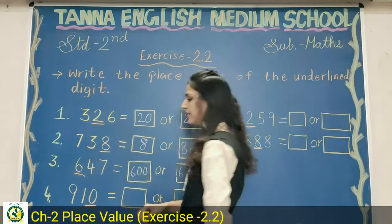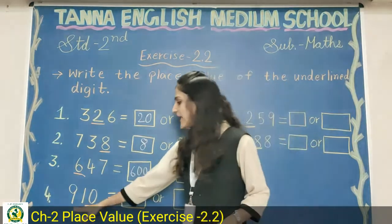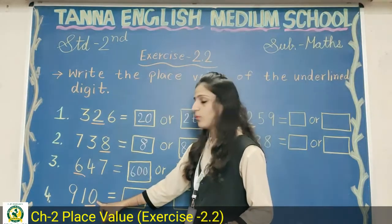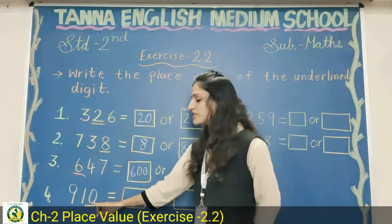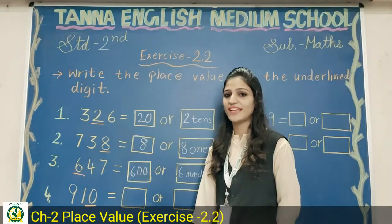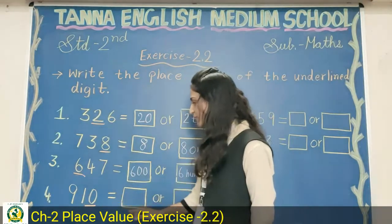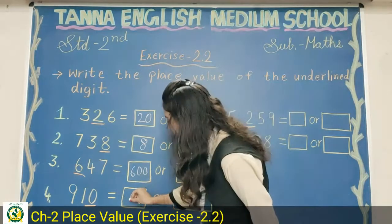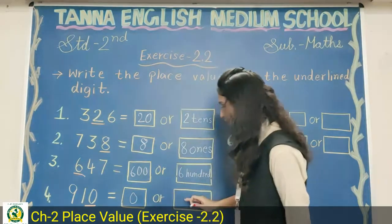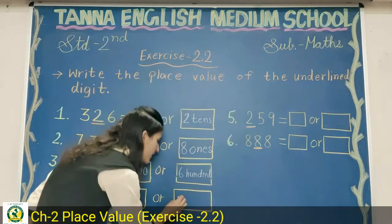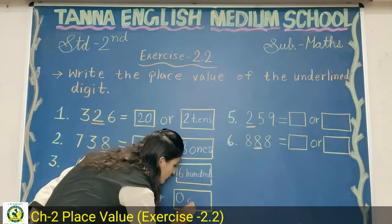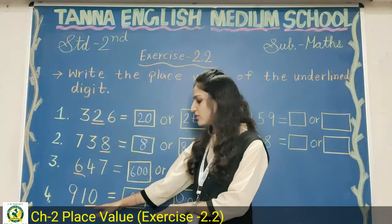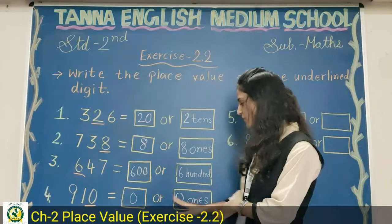Number four: nine hundred and ten. The underlined digit is zero. Zero is at ones place, which means we have zero ones. So in the first box, write zero, and in the second box, write 'zero ones.' Because the digit is zero, both boxes will show zero and zero ones.